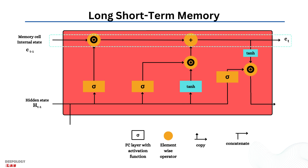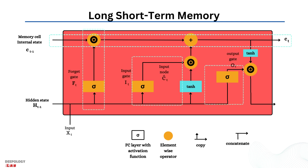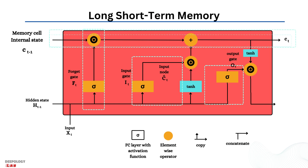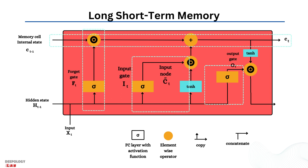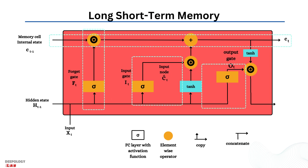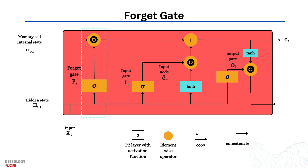Long short-term memory neural networks utilize a series of gates to regulate information flow in a data sequence. The forget, input, and output gates serve as filters and function as separate neural networks within the LSTM network. They govern the process of how information is brought into the network, stored, and eventually released. The first stage in the architecture is the forget gate.